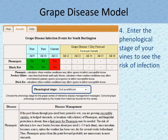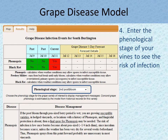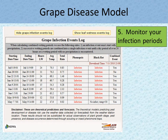In the Grape Disease model, you can see the risk of infection — past, present, and future — for powdery mildew, phomopsis, and black rot, once you enter the phenological stage of your vines. The chart below gives you management options according to your risk of infection. This model will also show exactly when infection periods have occurred for these three diseases throughout the growing season.